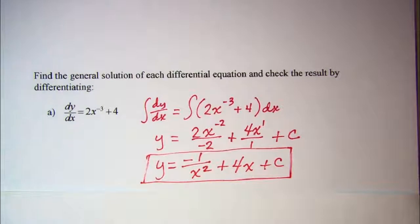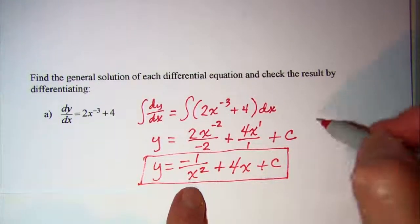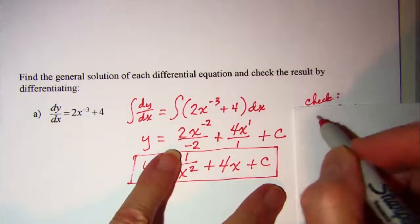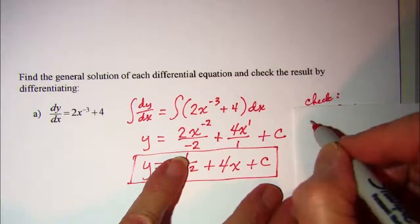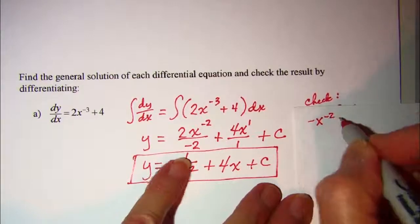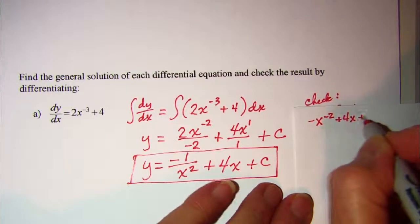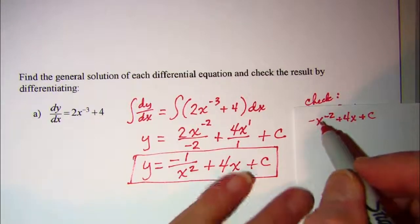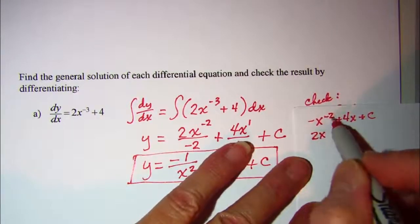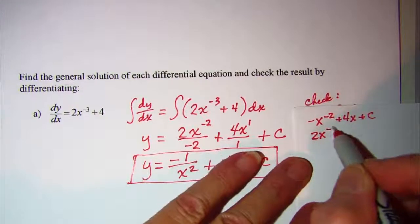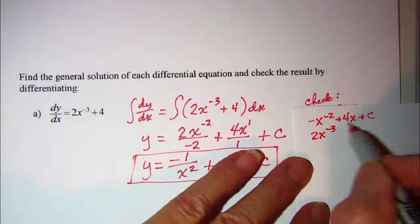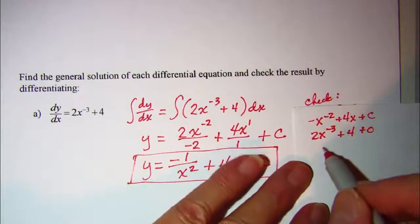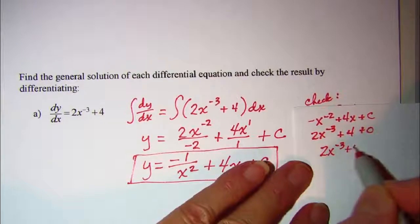Now we check by differentiating. We have y equals negative x to the negative 2 plus 4x plus C. Applying the power rule: multiply negative 2 times negative 1 to get 2, and decrease the exponent by 1 to get x to the negative 3 power. The derivative of 4x is 4, and the derivative of the constant is 0. So dy/dx equals 2x to the negative 3 plus 4 — it checks out.